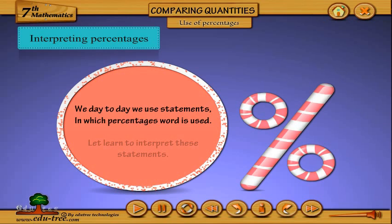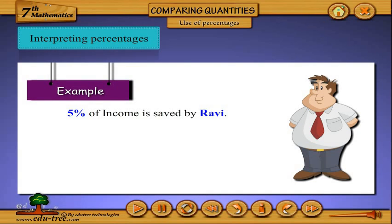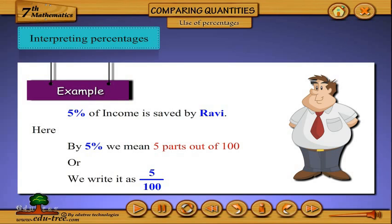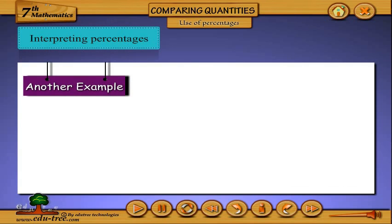Day-to-day we use statements in which the percentages word is used. Let's learn to interpret these statements. Example: 5% of income is saved by Ravi. Here by 5% we mean five parts out of 100, or we write it as 5 by 100. It means Ravi is saving 5 rupees out of every 100 rupees that he earns.